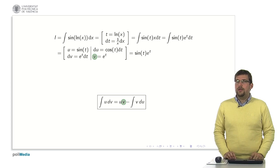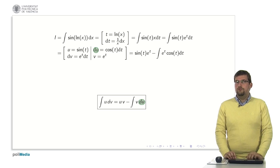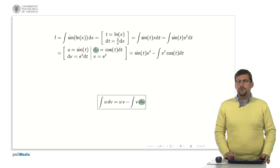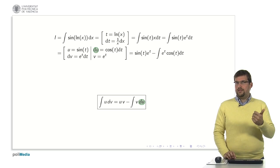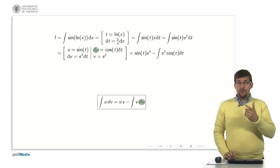This would be equal to u which is the sine times v which is the exponential minus the integral of v which is the exponential times the differential of u which is the cosine. Well now that we have reached this point we realize that we have a term the sine times the exponential and we have also gotten an integral that is very similar to the one we had above. Before we had the exponential times the sine and now we have the exponential times the cosine. Then what we are going to try to do is the following.